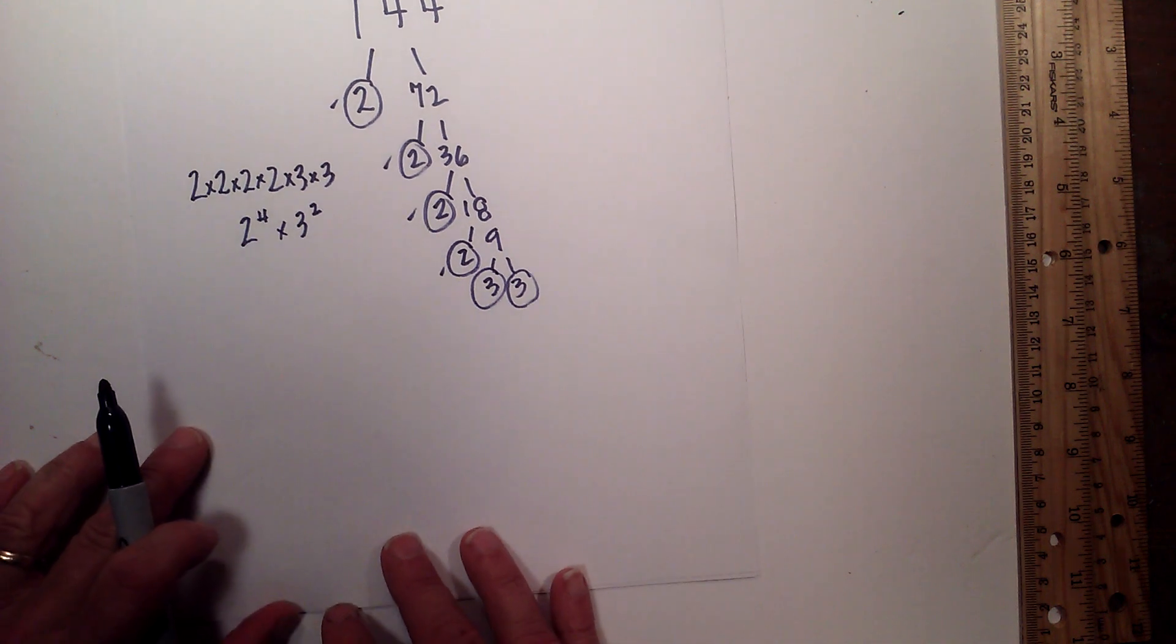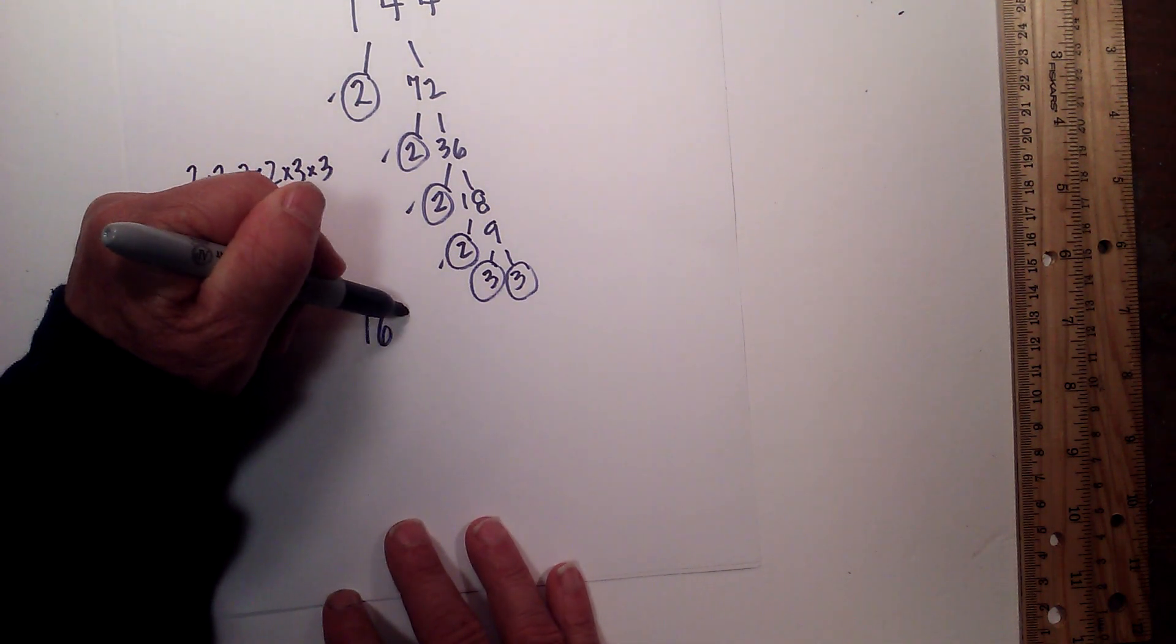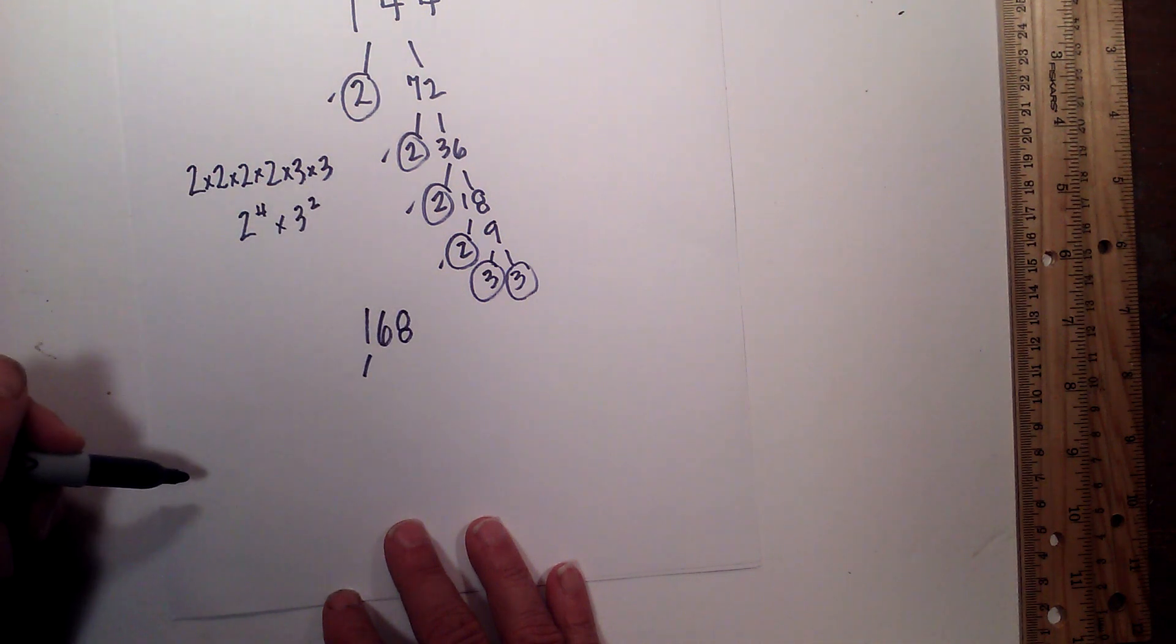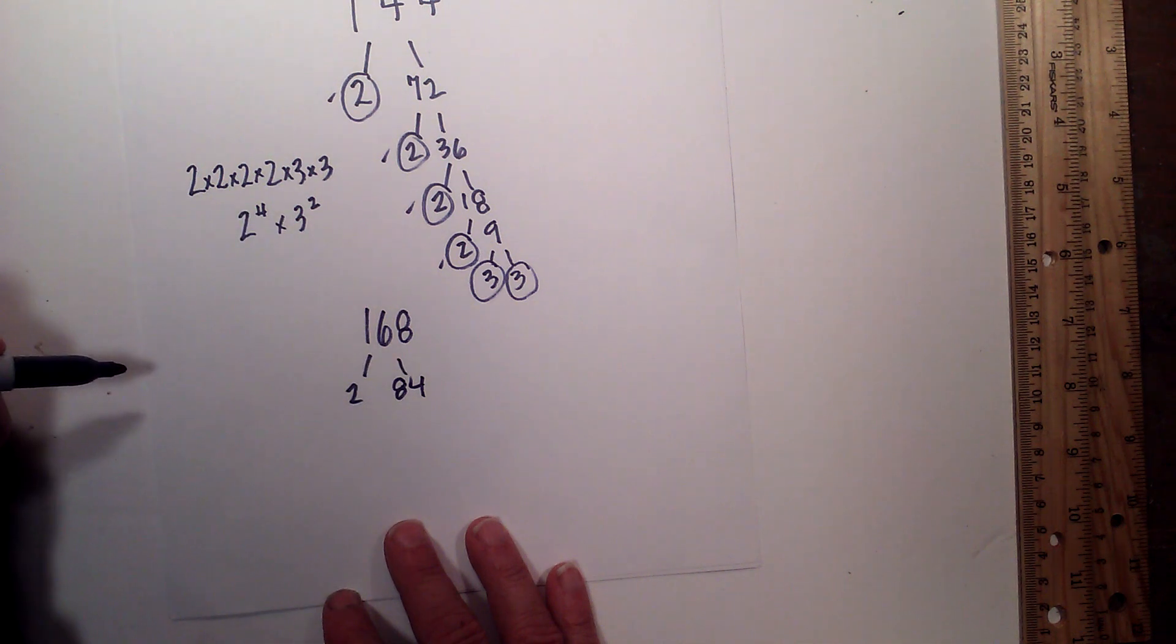Okay. So now let's move on to 168. I'll move this up just a little bit. And I will begin with a factor tree of 2 times 84 equals 168.